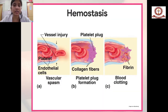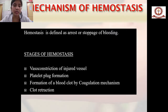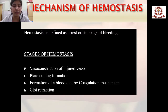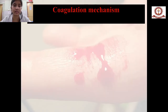Haemostasis is defined as the arrest or stoppage of bleeding. When a vessel wall is injured, haemostasis occurs through various stages: vasoconstriction of the injured vessel, platelet plug formation, formation of a blood clot by the coagulation mechanism, and finally clot retraction.